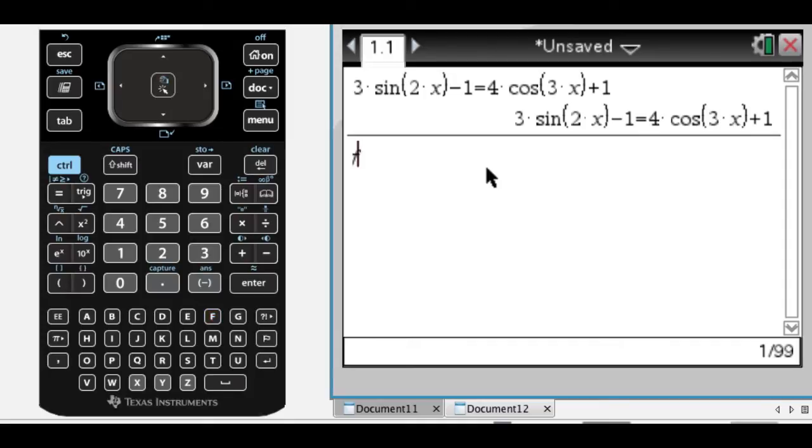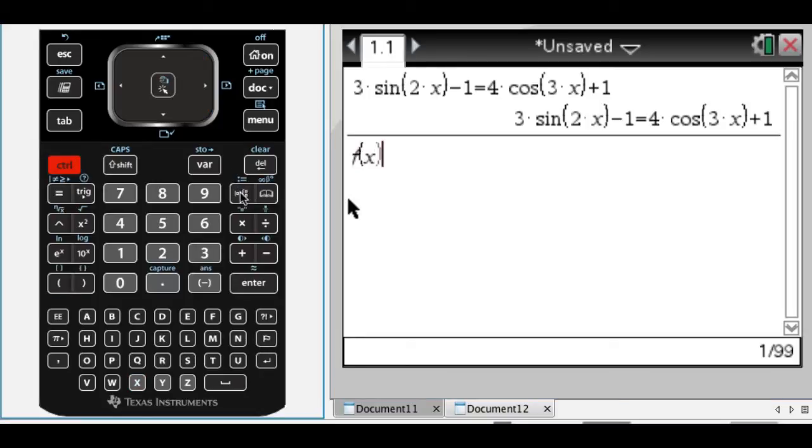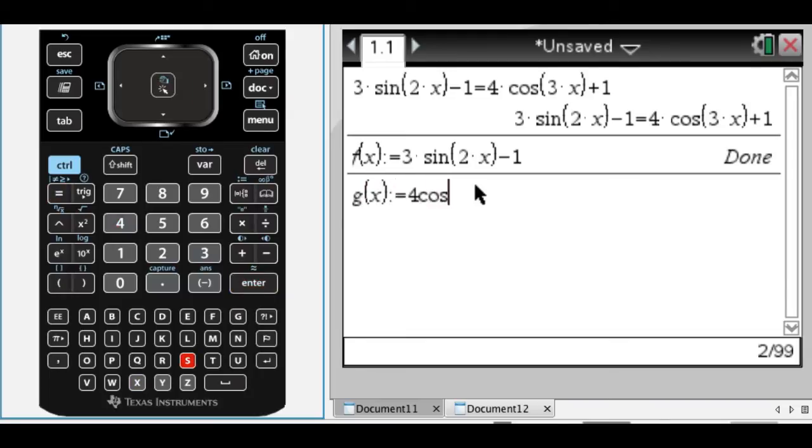So what I'm going to do is define each side of that thing to be a function, so f of x and then colon equals, which is control and then the templates, so 3 sine of 2x minus 1, and then g of x, and then colon equals 4 cosine of 3x plus 1.